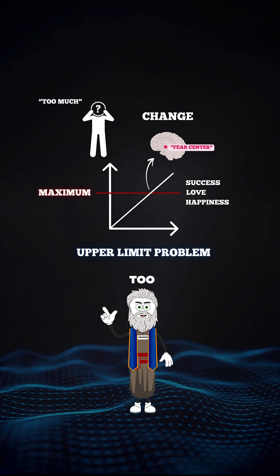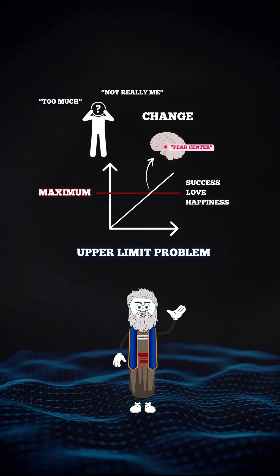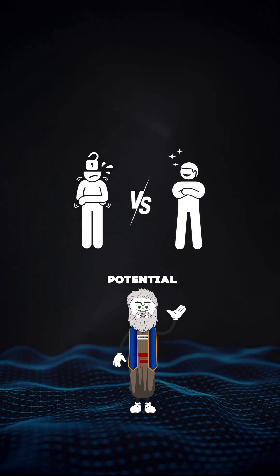You start feeling like an imposter, like it's too much or not really you. That's cognitive dissonance, your old self-image clashing with your potential.